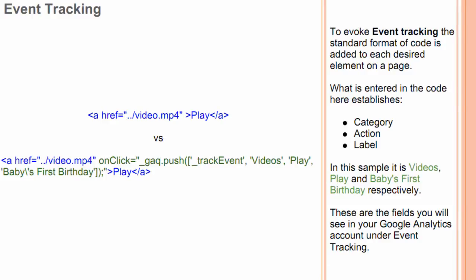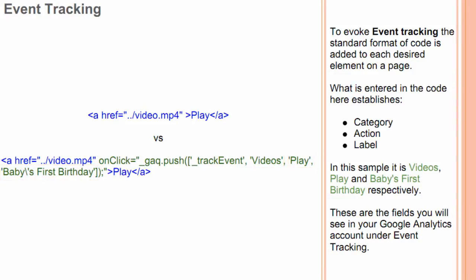To invoke event tracking, the standard format of code is added to each desired element on the page. What is entered in the code establishes category, action, and label — in this sample: videos, play, and baby's first birthday, respectively. These are the fields you will see in your Google Analytics account under event tracking.